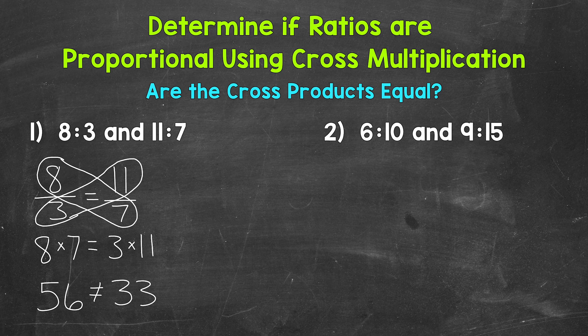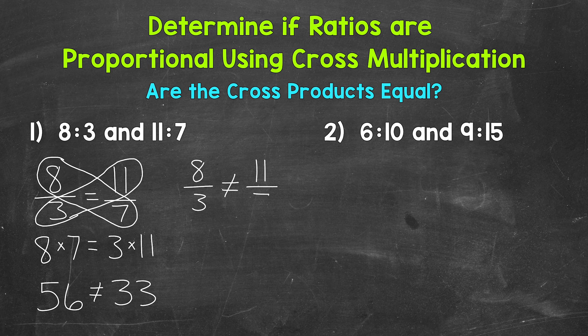56 is not equal to 33, so our cross products were not equal. That means we do not have a proportion. 8/23 and 11/27 are not proportional — they do not form a proportion.